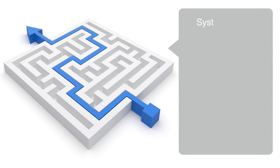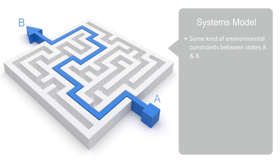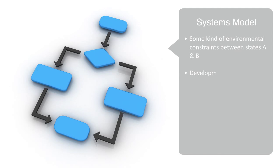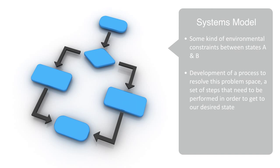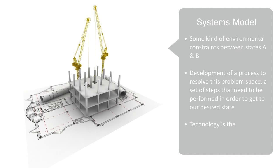In this model, we have a current state A and a future desired state B. This could be anything from being on one side of a river (state A) and wanting to get to the other side (state B), or being cold and wanting to get warm. We then have some kind of environmental constraints between state A and B. These environmental constraints generate the problem space that we need to resolve in order to get to state B. Engineering is the development of an algorithmic process to solve this problem space — that is to say, a set of steps that need to be performed in order to get to our desired state. Technology is the actual system that performs this process, taking us from A to B. In this way, we can think about technologies as systems that have some input of resources and perform a function on these inputs in order to produce some desired output.